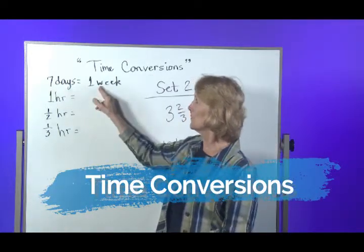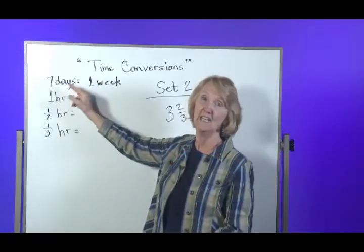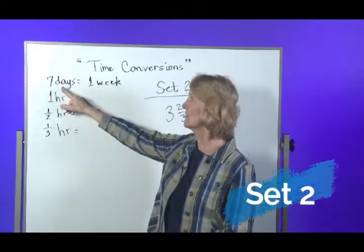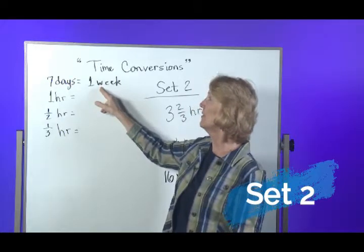Seven days equals one week, therefore 14 days would equal two weeks, and 21 days would equal three weeks.